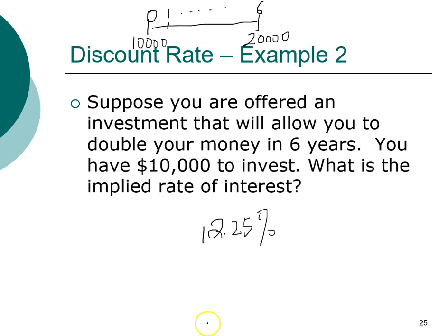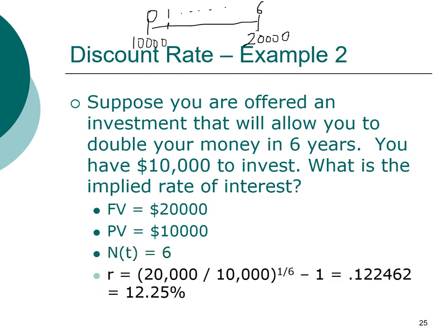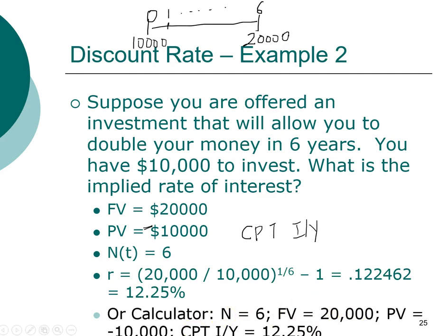If not, review your steps. The future value is $20,000, the present value is $10,000, and the investment horizon is six years. If using the formula, the sign convention doesn't matter. But if using the financial calculator, make sure to specify the present value as an outflow — enter negative $10,000 — and then compute the interest rate. Write down these steps to show your work.